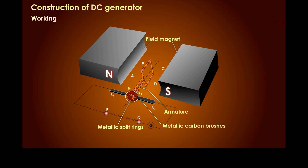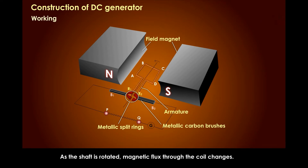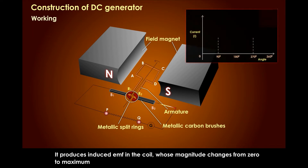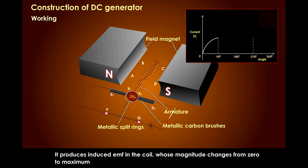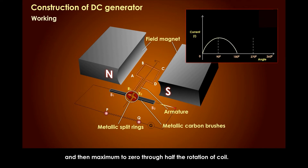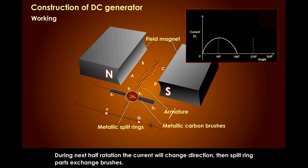Working: as the shaft is rotated, magnetic flux through the coil changes. It produces an induced EMF in the coil whose magnitude changes from 0 to maximum, and then maximum to 0 through half the rotation of the coil. During the next half rotation, the current will change direction.